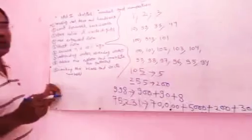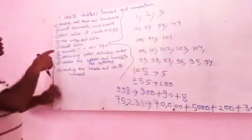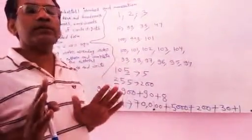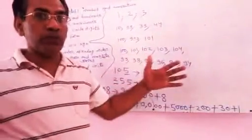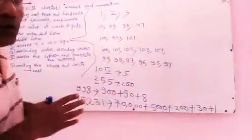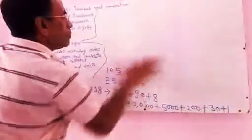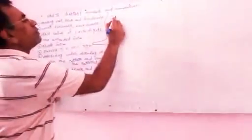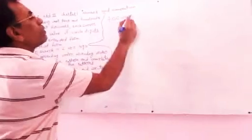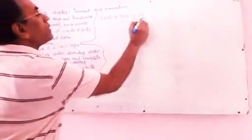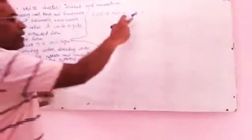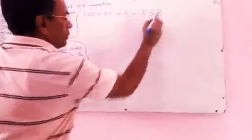Now I am going to teach you topic number 5: short form. You have been given numbers in expanded form and you have to write them in short form. For example, given 700 plus 50 plus 8 — you will add all together: 700 plus 50 plus 8 equals 758.